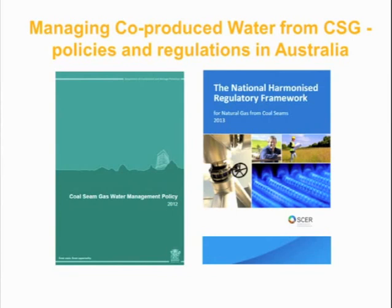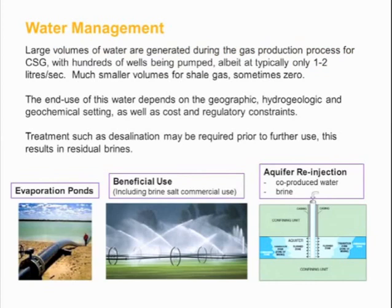Some recent reports, including the National Harmonized Regulatory Framework, deal with water management and co-produced water — the large volumes of water produced, more so for CSG than shale gas. What we can do with that co-produced water will depend on many factors. Strategies range from disposal in evaporation ponds and reuse for irrigation through to re-injecting co-produced water into underground aquifer systems.